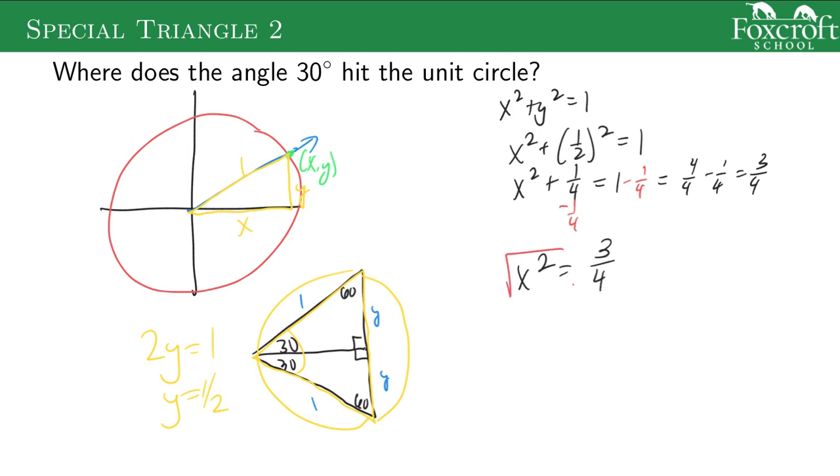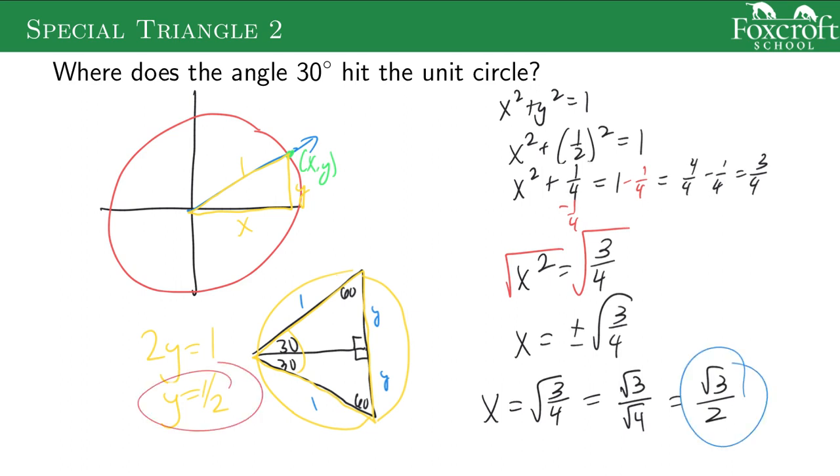I take the square root of both sides, and I get x is plus or minus the square root of 3 over 4. Again, just like the last time, the equation says it could be plus or minus, but the situation where I'm talking about this x value on the unit circle, only the positive makes sense. And then I can split up the square root over division, and the square root of 4 is 2. So the x value is the square root of 3 over 2, the y value is 1 half.